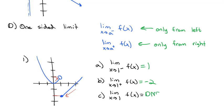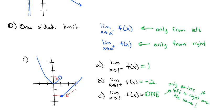We still cannot say the limit as x approaches 1 exists, because from one side it's 1 and from the other side it's -2 — they're not the same. The overall limit only exists if the left-side limit and the right-side limit are equal. If they're not the same, the limit does not exist.